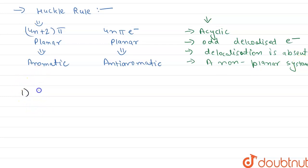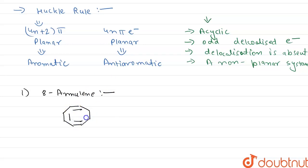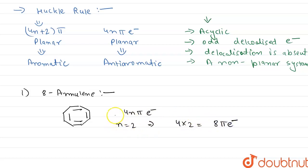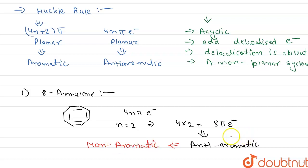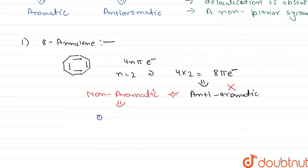Now, we have been given 8-annulene and 10-annulene. First, we will discuss 8-annulene. The 8-annulene has a cyclic structure with 4 pi bonds, giving it 8 pi electrons. This follows the 4n pi electron rule where n equals 2, so 4×2 = 8 pi electrons. This would suggest that 8-annulene is anti-aromatic, but in actuality it is a non-aromatic compound.